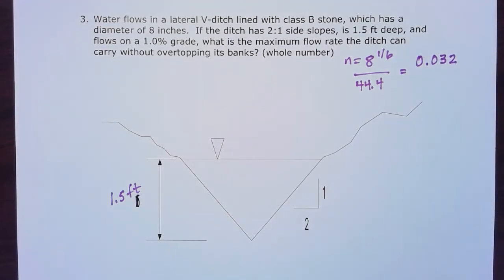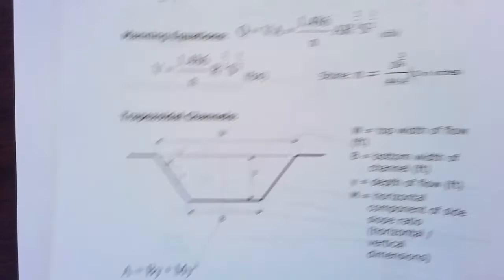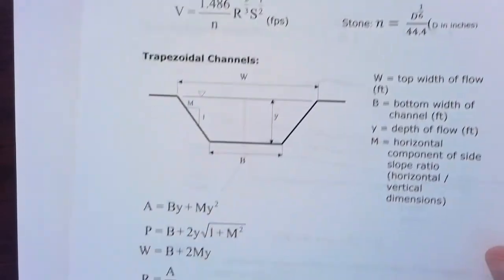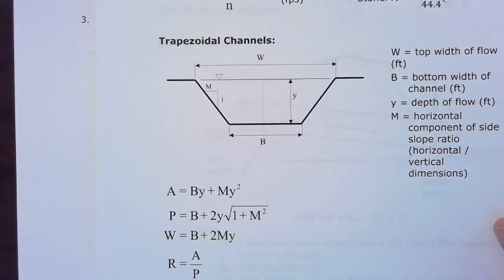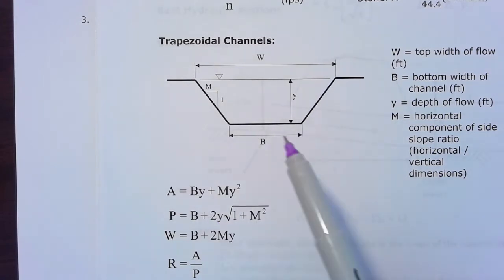The next thing I'm going to notice is even though this is a V-ditch, I still have to find its hydraulic radius to use the Manning equation, and I still have to find its area. So I can actually use these trapezoidal channel formulas that I derived earlier based on these dimensions of a trapezoid, but then just see for a V-ditch, for instance, this B would be equal to zero. So how is that going to affect these formulas?